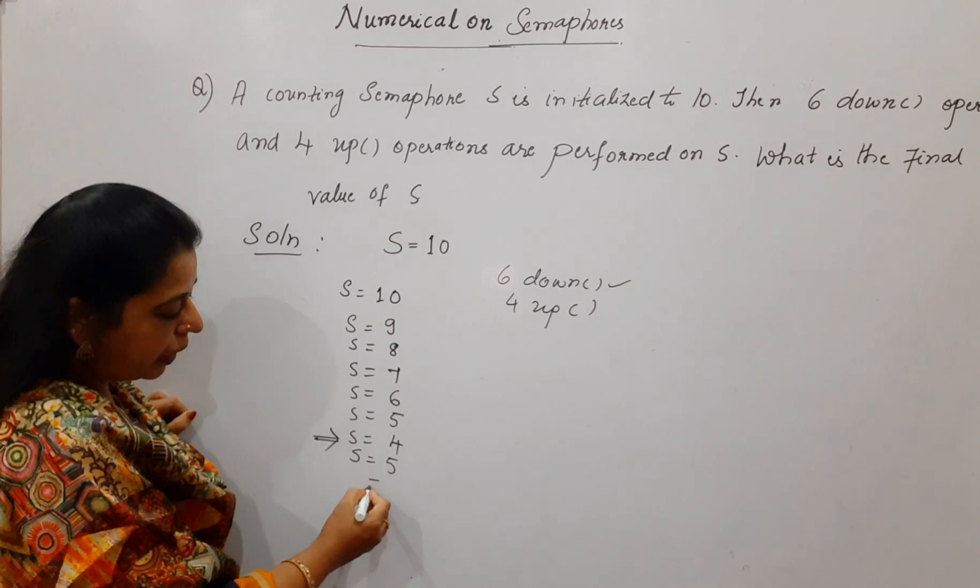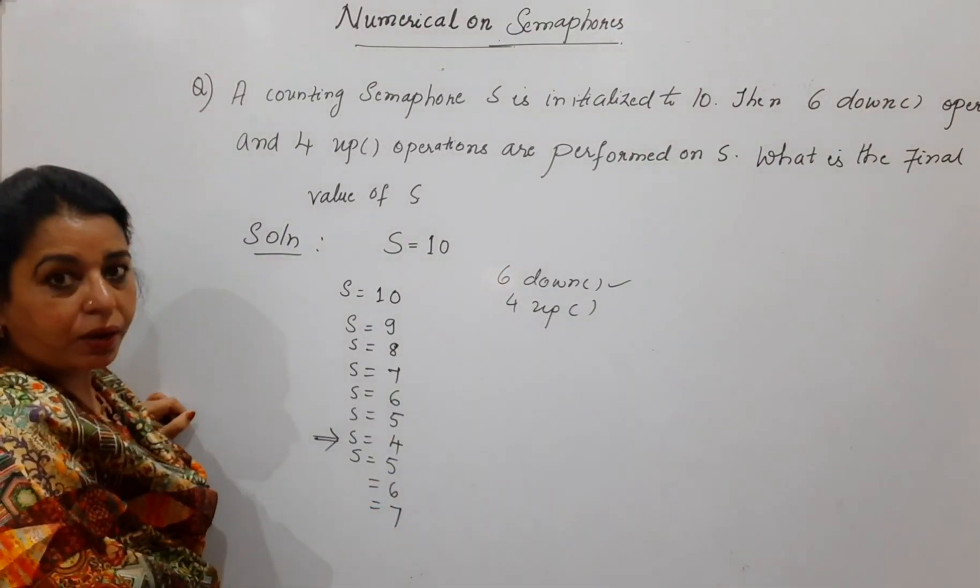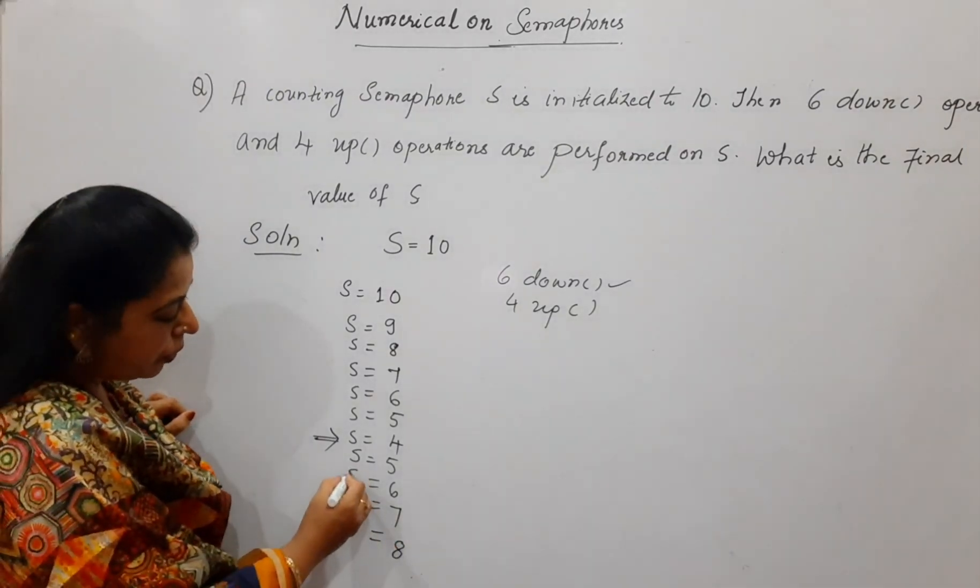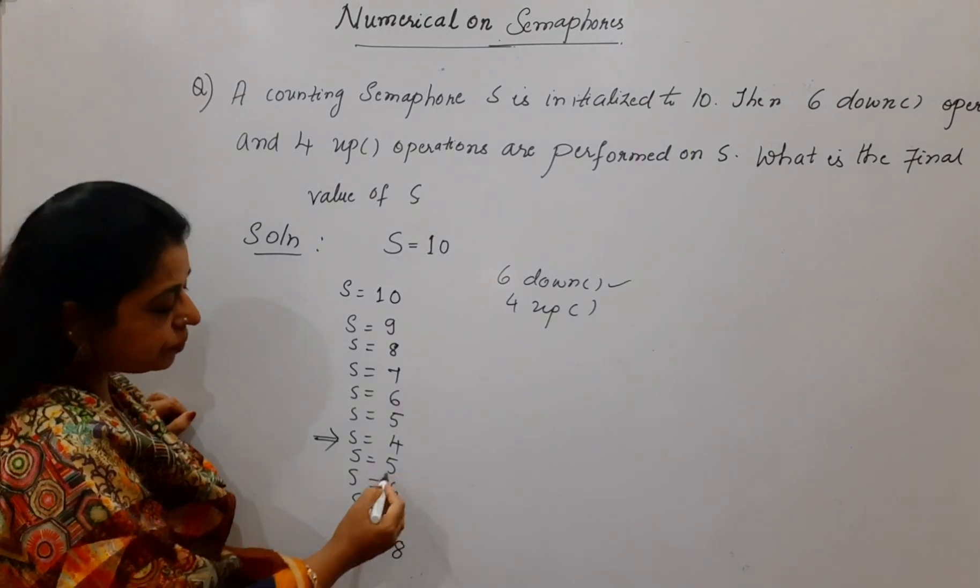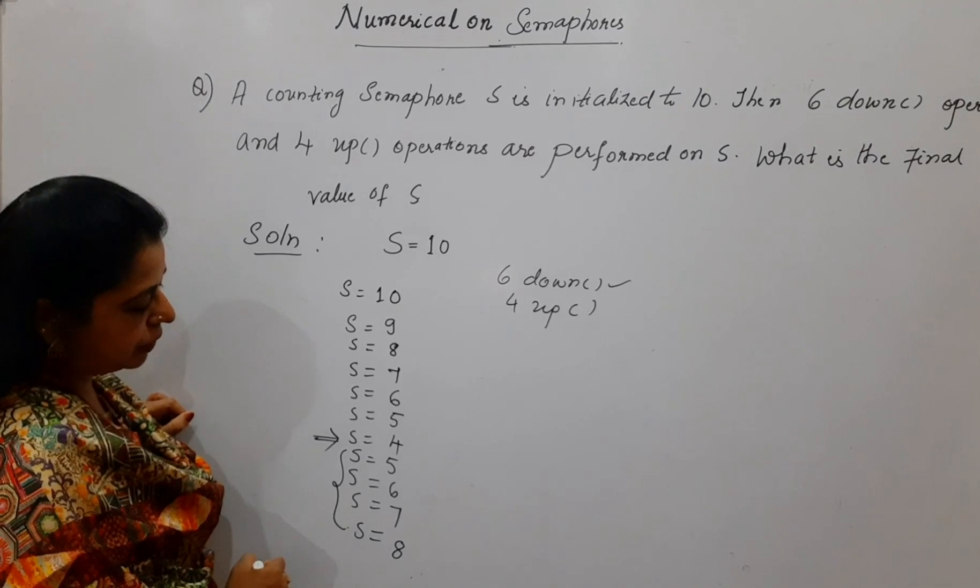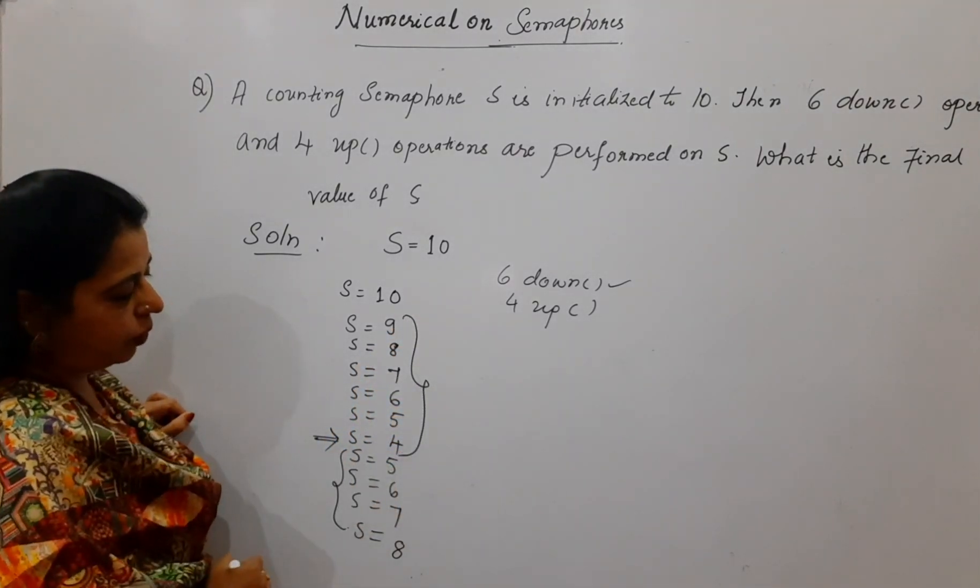The next time when you carry out the up operation, S becomes 6. The next time when you carry out, it will become 7. The next time when you carry out, it will become 8. Why you have to stop here? Because only 4 up operations are given here. These are the 4 up operations.